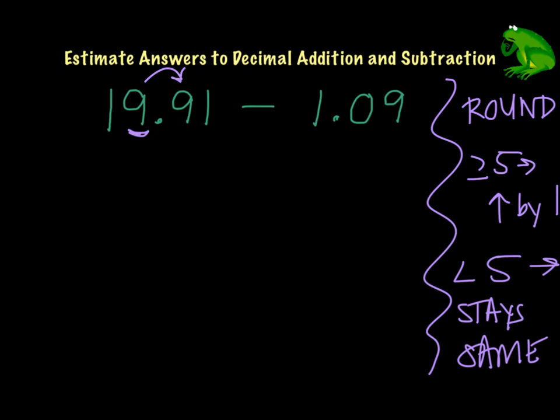Well, we know when 9 goes up by 1, it goes to a 10. So the 0, and then we have to move the 10 over so it becomes 20. Put our decimal and then put our zeros after because we rounded. Let's check out this one.